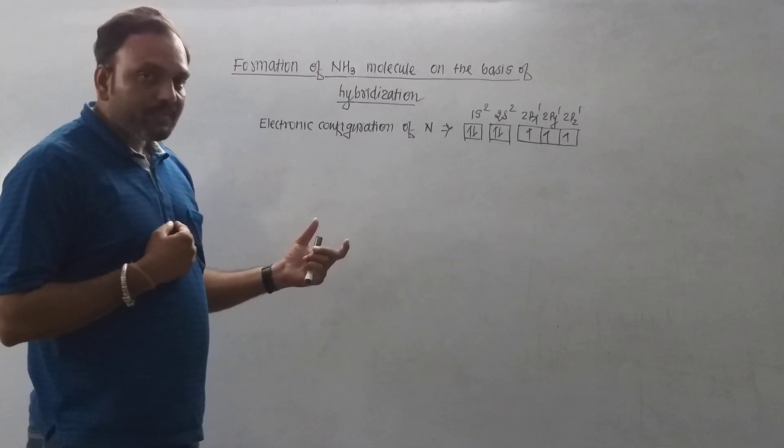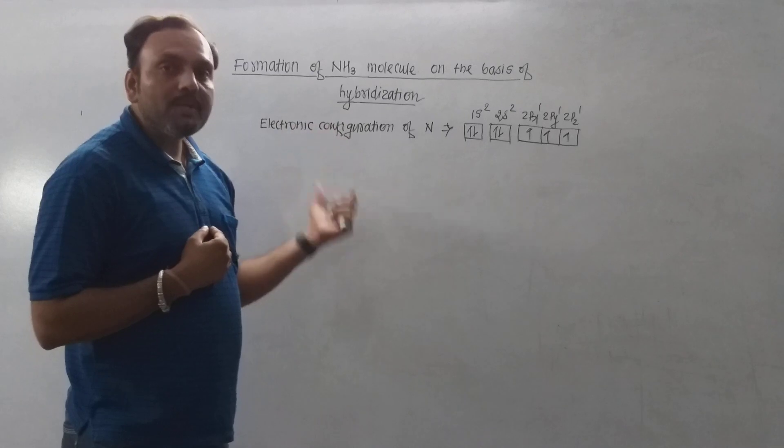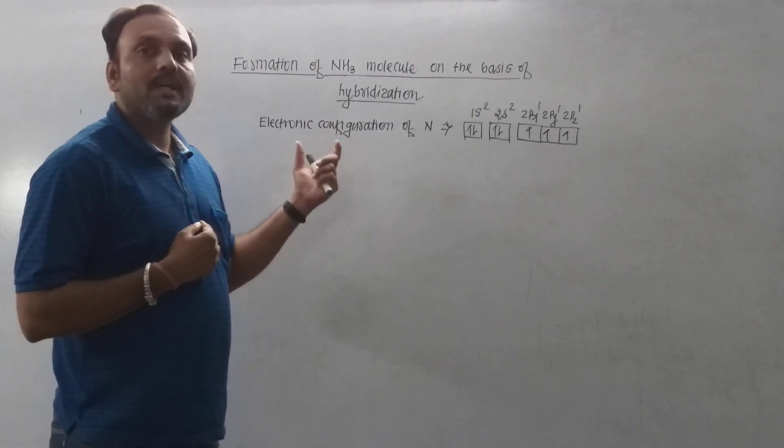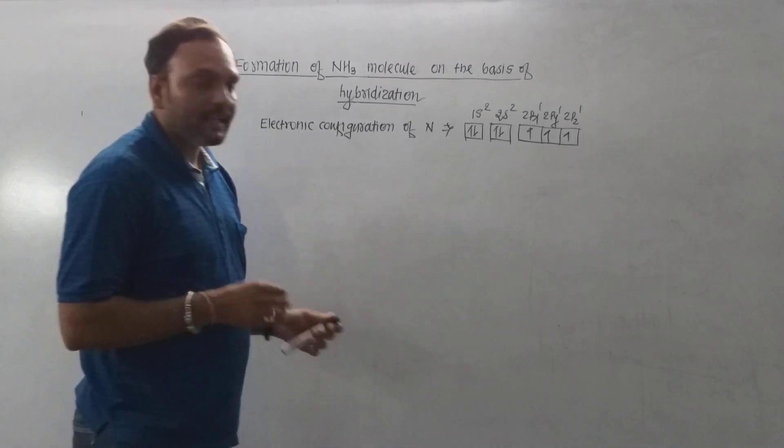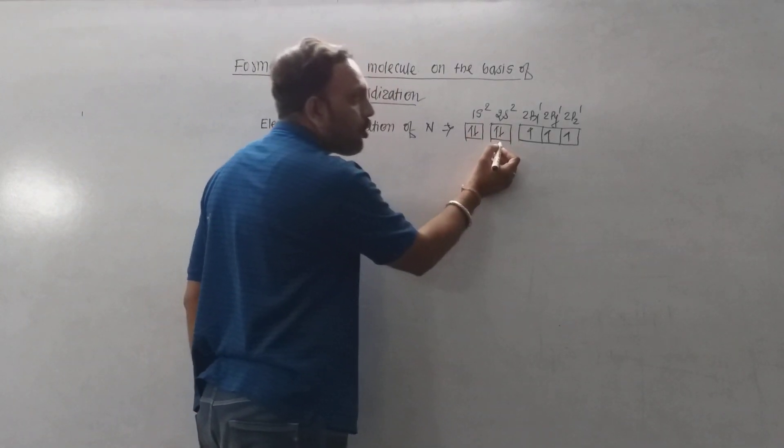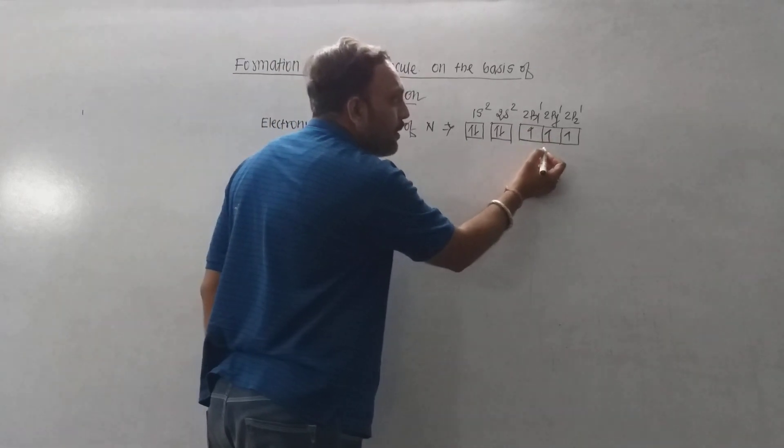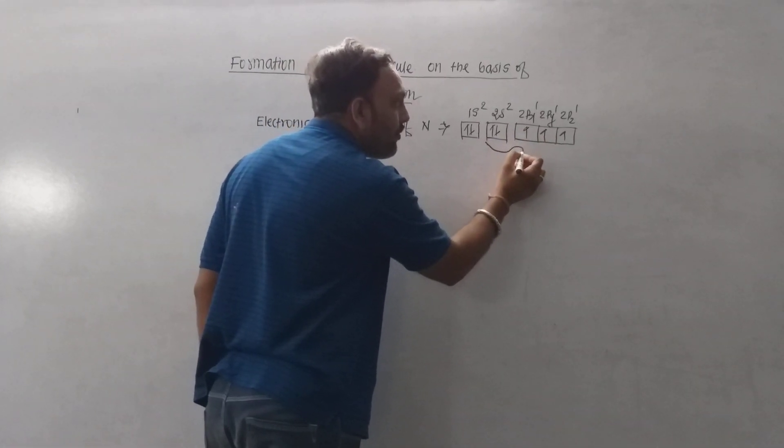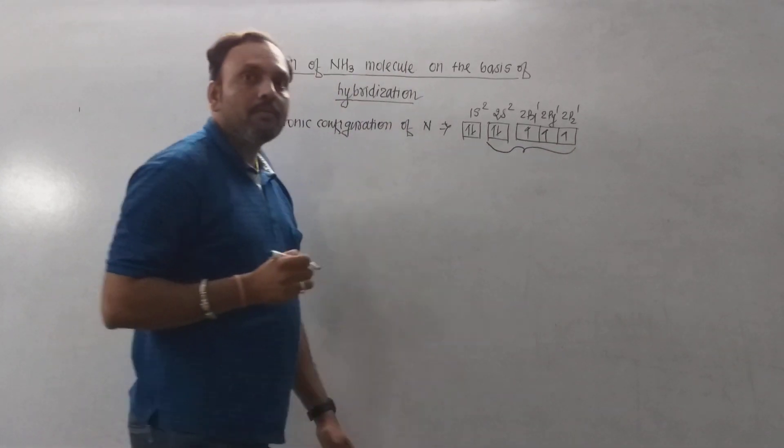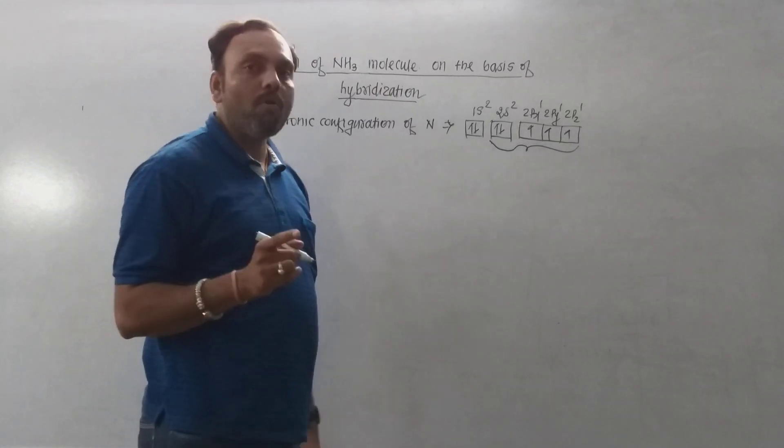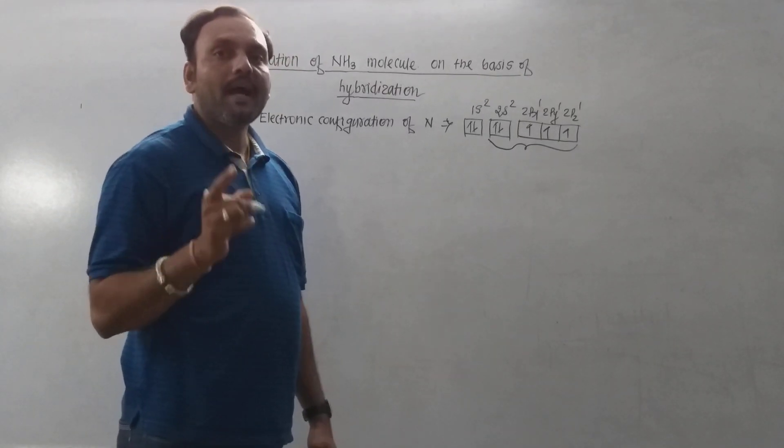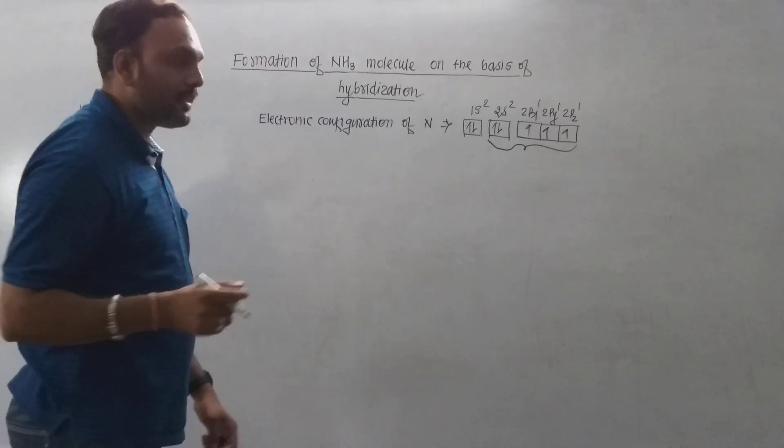By formation of ammonia molecule, nitrogen undergoes sp³ hybridization by mixing one 2s orbital and three 2p orbitals of the valence shell, which leads to the formation of 4 sp³ hybrid orbitals having maximum symmetry.